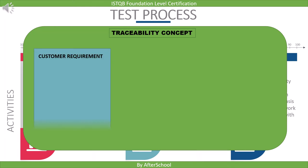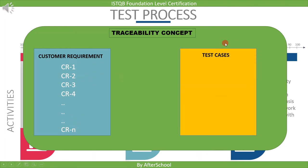Suppose a customer gave you some requirements to test. It can go up to 1000 requirements, which we are representing by the letter N here. Once you get these requirements, you will develop test cases for each requirement. For example: test case 1, test case 2, test case 3, test case 4 — and it is up to you how many test cases you want to write to cover all the requirements.